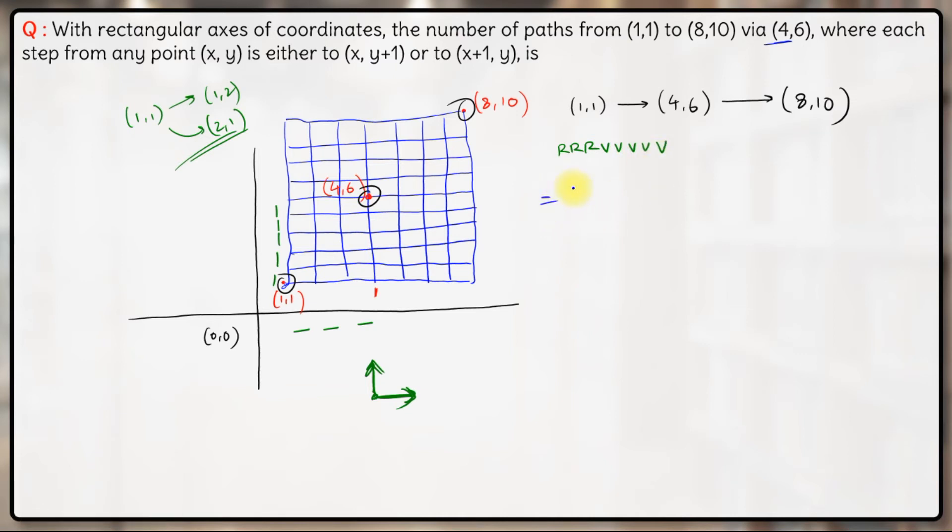So the number of ways will be, how many objects are there? 1, 2, 3, 4, 5, 6, 7, 8. 8 factorial divided by, out of these 8, these 3 are similar and these 5 are similar. So these are the number of ways for going from (1,1) to (4,6).